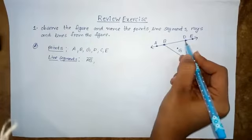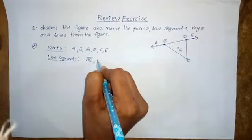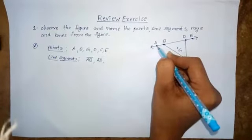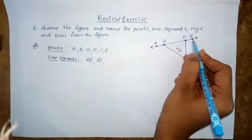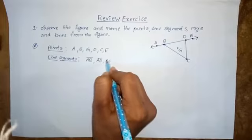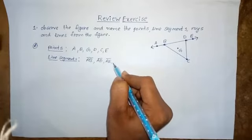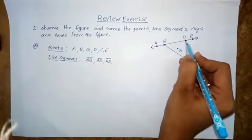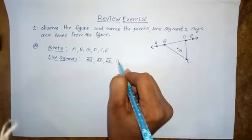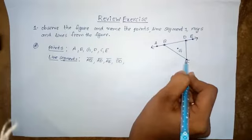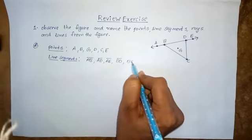So write AB as one line segment. Next, from A to D is also one line segment — AD. Next, from point A to E is also a straight path and line segment — AE. Next, from B to D is also one line segment — BD.